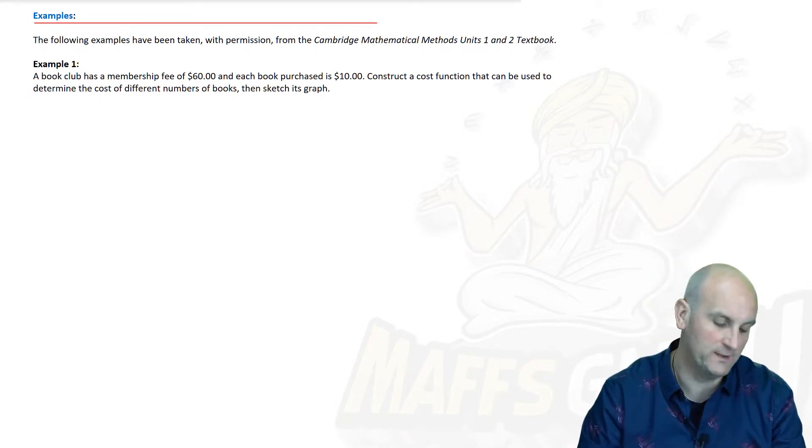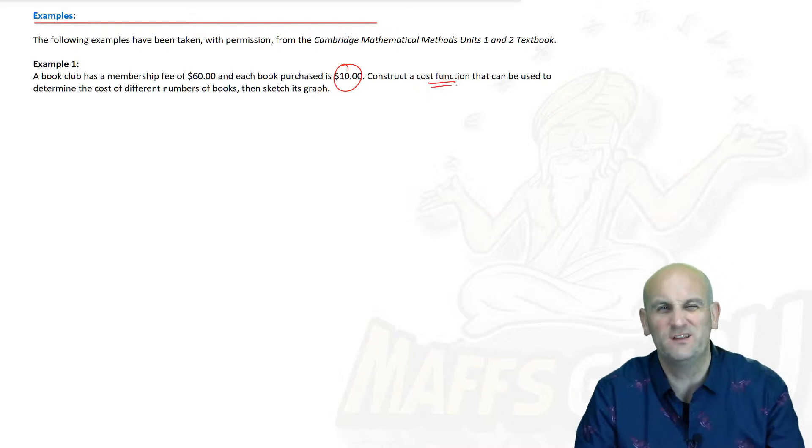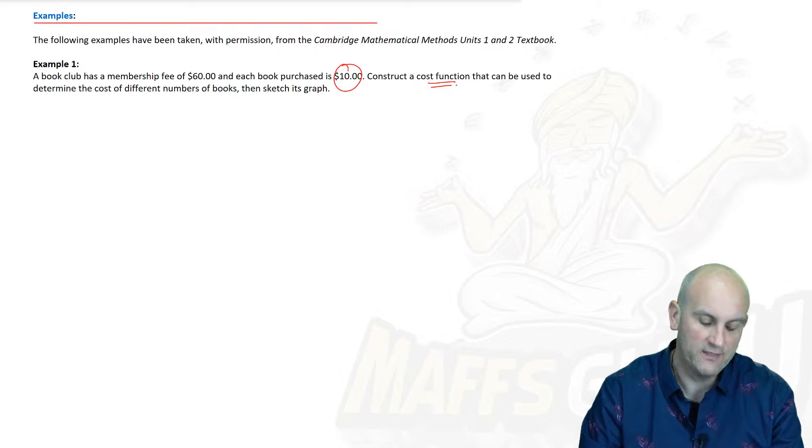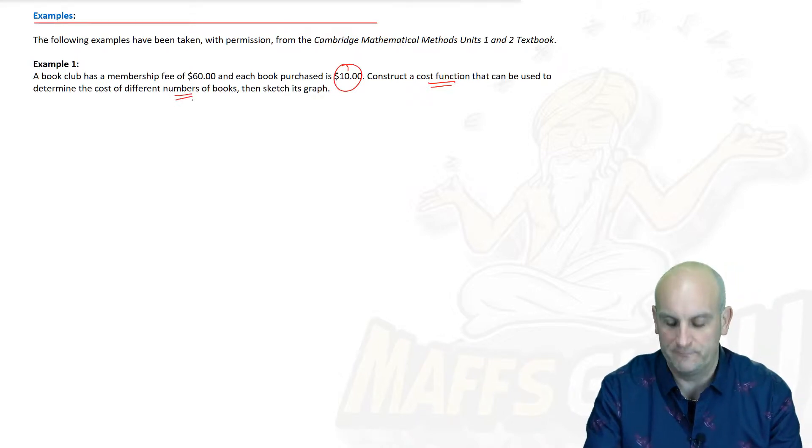Example 1: A book club has a membership fee of $60 and each book purchased is $10. Construct a cost function that can be used to determine the cost of a different numbers of books and then sketch its graph. So we're obviously talking about changing the number of books.